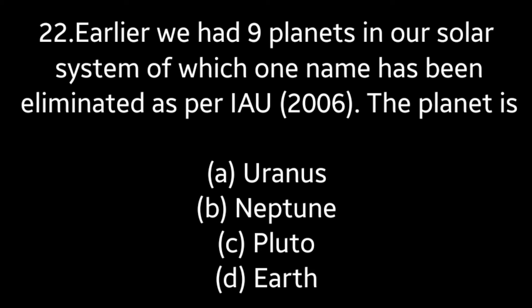Question number 22: Earlier we had 9 planets in our solar system, of which one has been eliminated as per IAU. The planet is — Uranus, Neptune, Pluto, Earth. Answer is option C — Pluto.